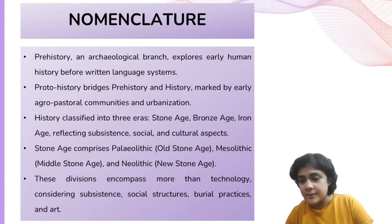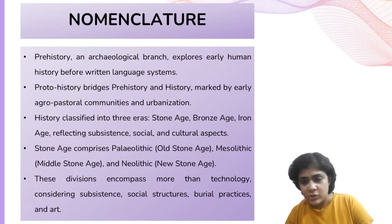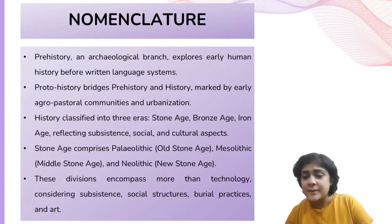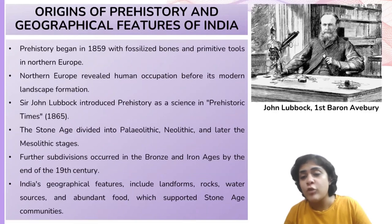The Stone Age can further be categorized into three distinct periods: Paleolithic, which is the Old Stone Age; Mesolithic, the Middle Stone Age; and Neolithic, the New Stone Age. The term 'lithic' is derived from the Greek word 'lithos,' meaning stone. The concept of prehistory came into existence in 1859 when primitive stone tools were discovered alongside the fossilized remnants of extinct species such as wild cattle and large mammals in northern Europe.